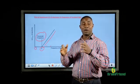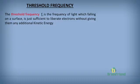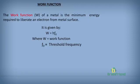The threshold frequency is the frequency at which electrons begin to leave the surface of the metal. It is defined as the frequency of light which, when it falls on a surface, is just sufficient to liberate electrons without giving them any additional kinetic energy. The work function W is the minimum energy required to liberate an electron from a metal surface, given mathematically by W equals H multiplied by F0, where F0 is the threshold frequency.